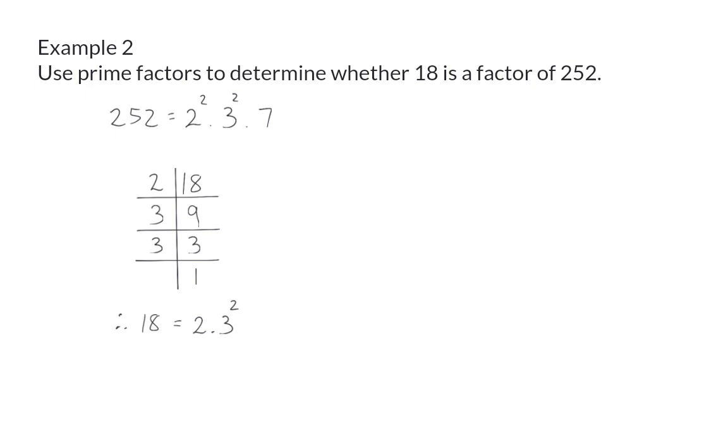To do this, we need to determine whether we can form 18 by making use of some of the prime factors of 252. So, let's compare these two sets of prime factors. To form 18, we need a 2 that is available at 252, and we need two 3s that are also available in 252.